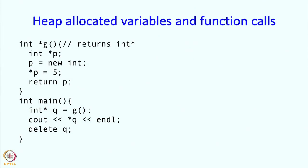So here is an example showing how the heap memory functions and how it is different from the standard activation frame memory. In this program, main starts off by creating a variable q, which is a pointer to int — of type int star — and q is being assigned the result of calling g. Notice that g is returning a pointer to int; int star is the return type. So what happens inside g? Well, first a local variable p is created of type int star in the activation frame of g.